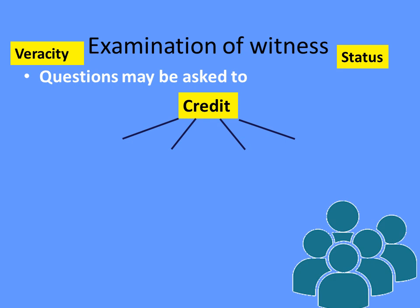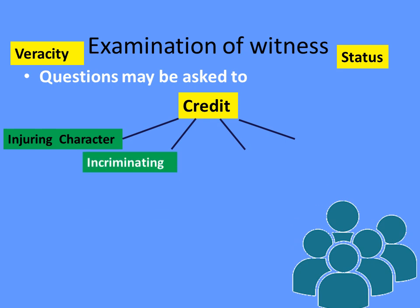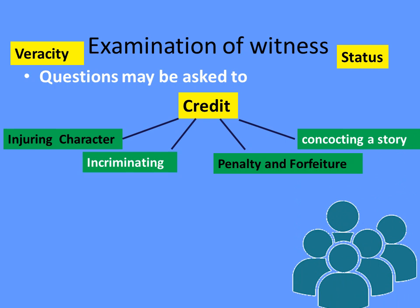While examining a witness, advocates make attempts to discredit the witness or the story. How do you discredit a witness in cross-examination? One way is to injure or damage the character of the witness, causing the court to doubt their integrity. Another is to incriminate the witness in various other offenses, raising doubt over their veracity. Asking questions about involvement in crimes attracting penalty or forfeiture also helps in disbelieving the witness, as does proving that what they are saying is a concocted story.